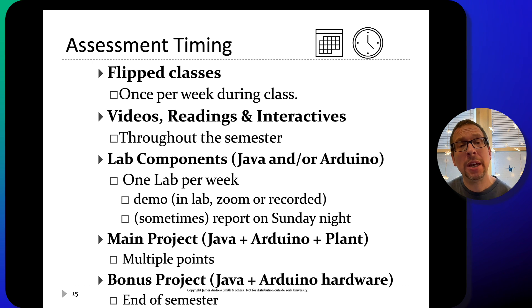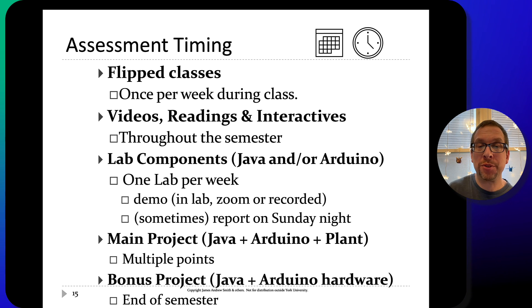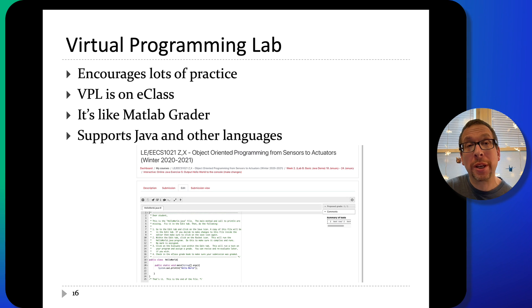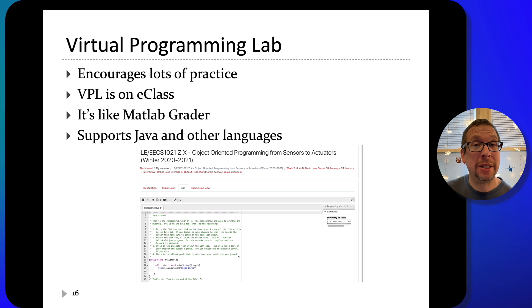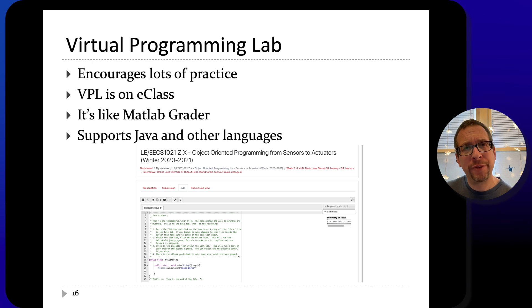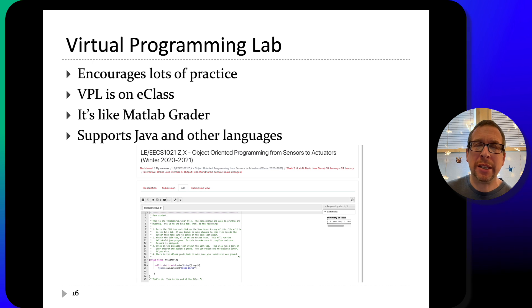Main projects will be done using Java and Arduinos, and there's a bonus project at the end that also uses Java and Arduino for the design work. For activities, instead of MATLAB Grader as used in 1011, you'll be using Virtual Programming Lab for this course. It's similar but a little more difficult to use — you'll get used to it — and it's available directly on the eClass page.